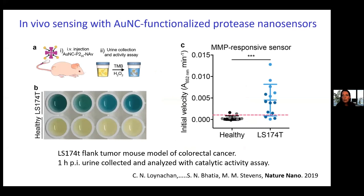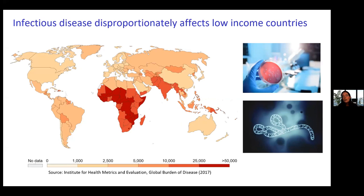We did an in vivo validation of this in Sangita Bhatia's lab with their mouse model for colorectal cancer. In healthy mice the urine stays yellow, and in mice with the cancer model the urine turns a striking blue color. This is still early work in the small animal model at the moment, but we're really interested to see how we can take this forward to different disease applications and different models.